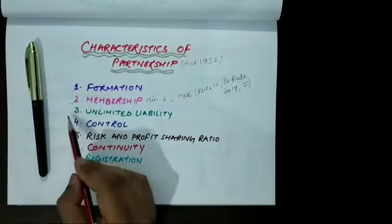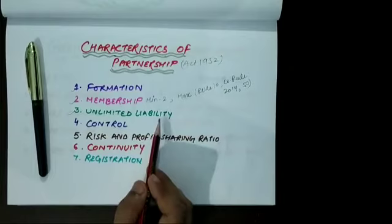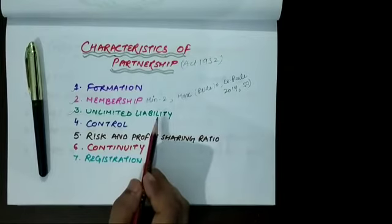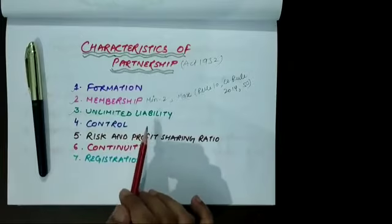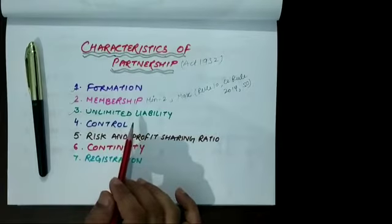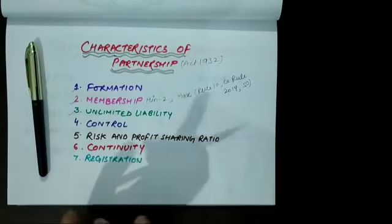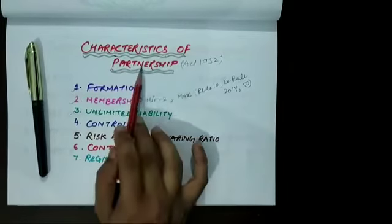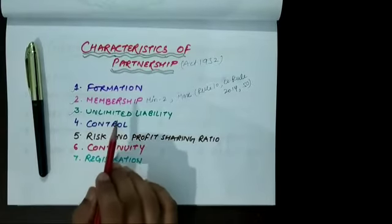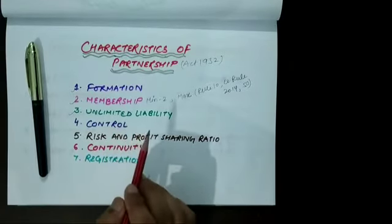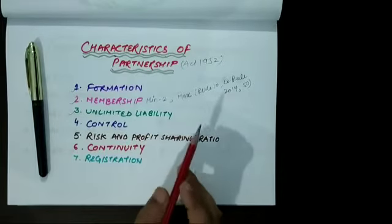The third one is unlimited liability. The partners of the firm have unlimited liability. It means that their personal assets can also be used for paying the debt of the business.